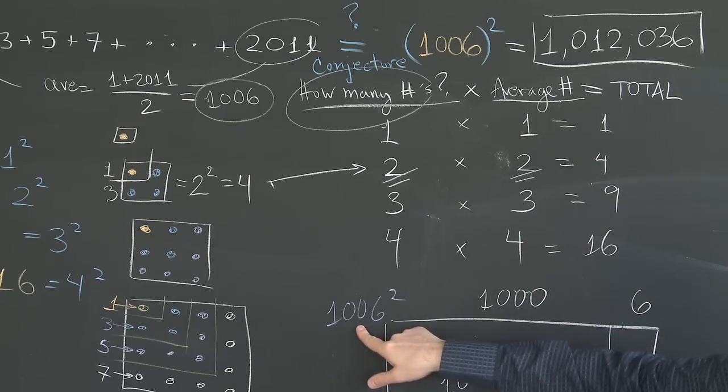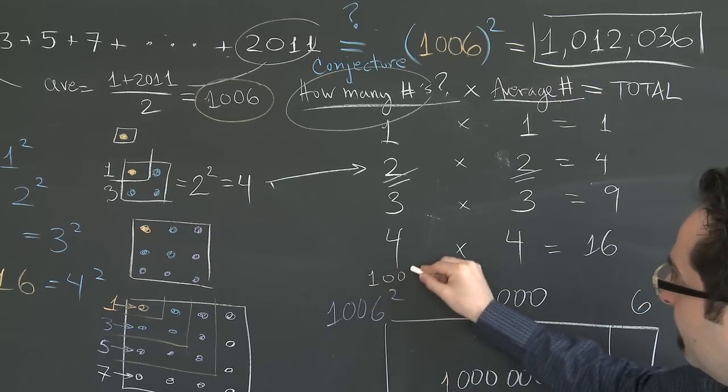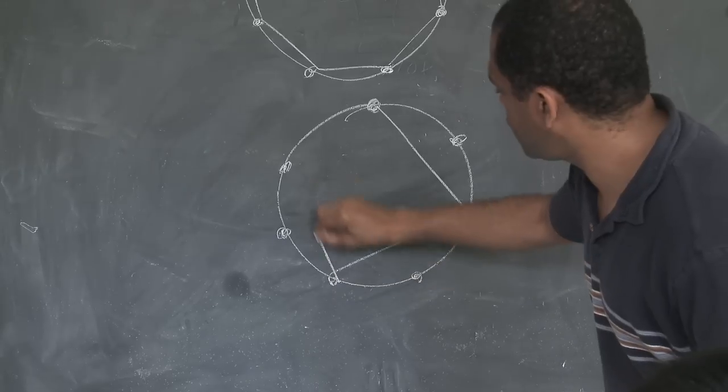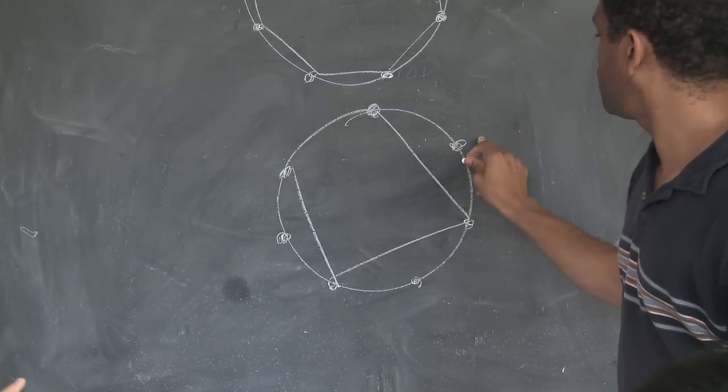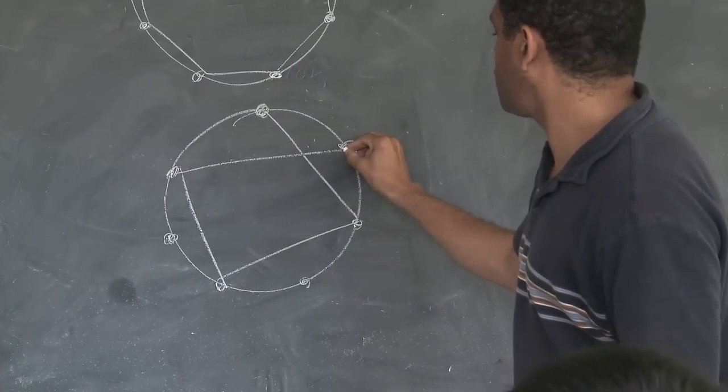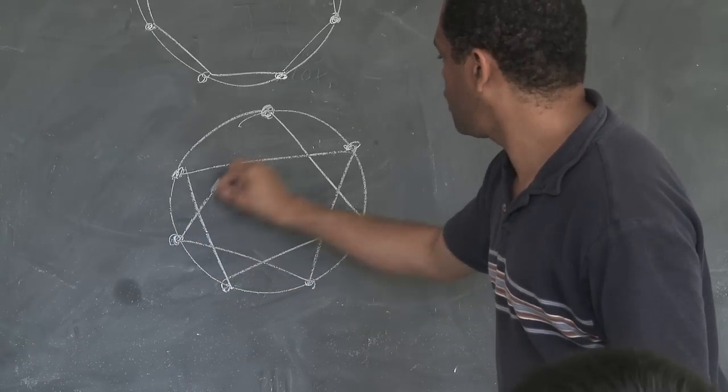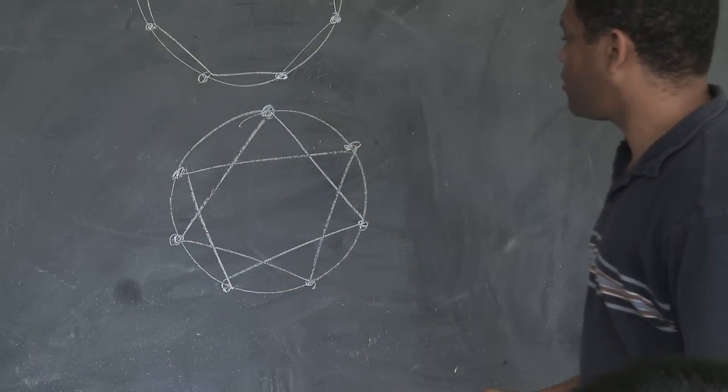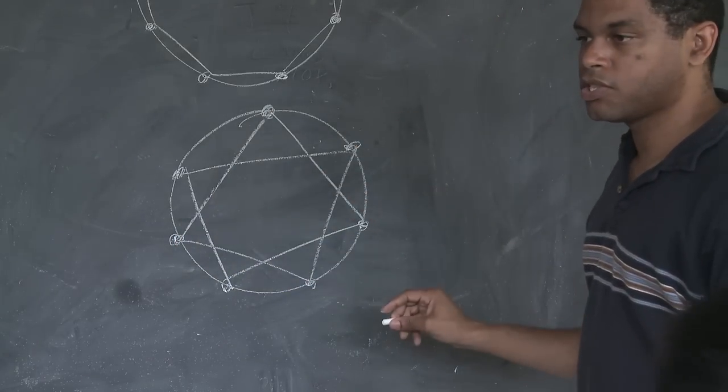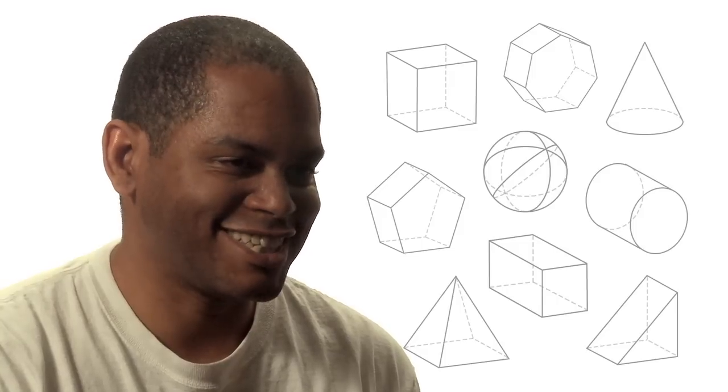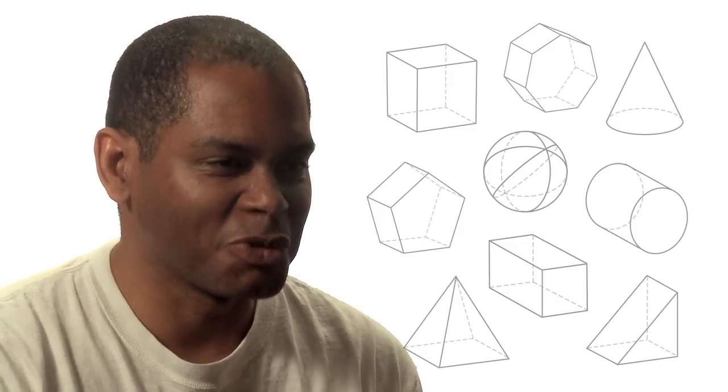Math creates these sort of Rosetta Stones that are able to translate from one area into the other area. General themes you might look for would be, was there some symmetry? Is there something about the problem where one side looked exactly like the other side, and one side was easier to work with? So you work on the easy side, but it tells you information about the hard side. A picture, like they say, is worth a thousand words. I think it's worth more than that. A picture can open up things to you that you completely would not have seen without a picture.